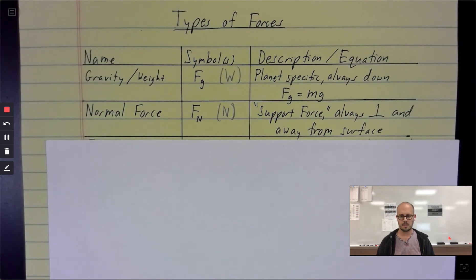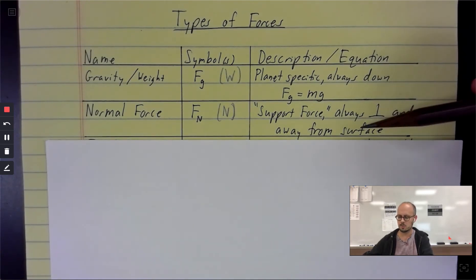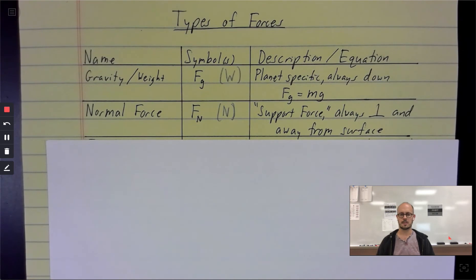The normal force is called normal because that's a math term. Normal means perpendicular to a plane. And so if you imagine like your desk right now is a plane, anything on it has a force, a normal force that's directed perfectly upward. So that's the rule for the normal force. It's always perpendicular to and away from the surface because when one object is sitting on another object, they are each pushing away from one another. They're pushing the other object away.